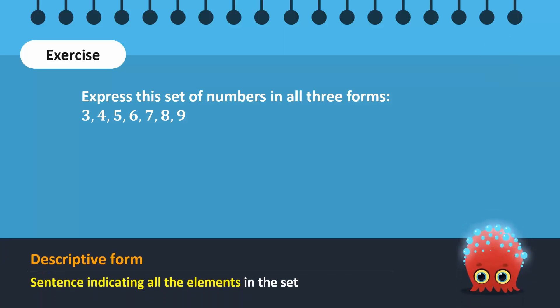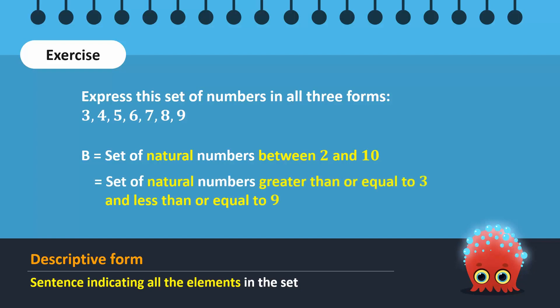In the descriptive form, we can simply state that B is the set of natural numbers between 2 and 10. Similarly, we can also write that B is the set of natural numbers greater than or equal to 3 and less than or equal to 9.